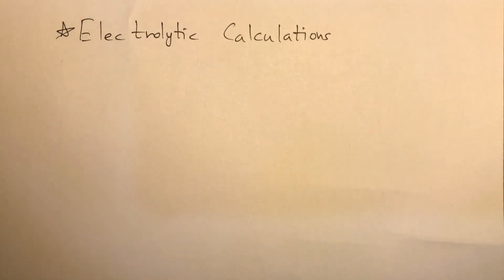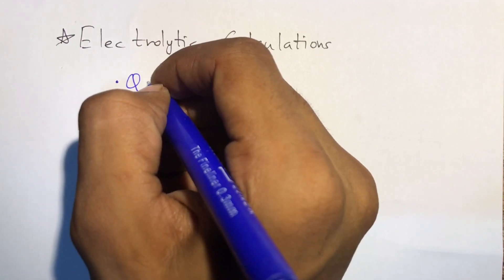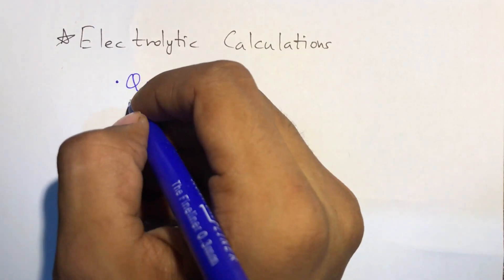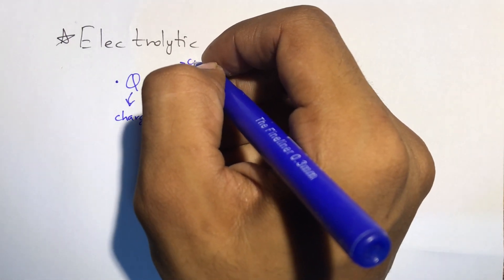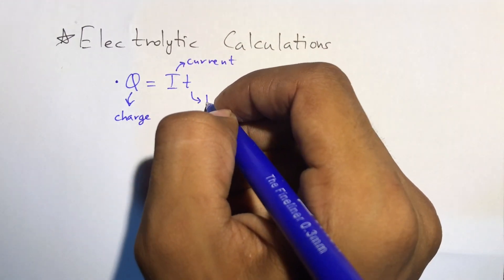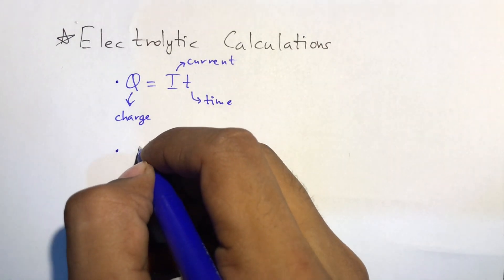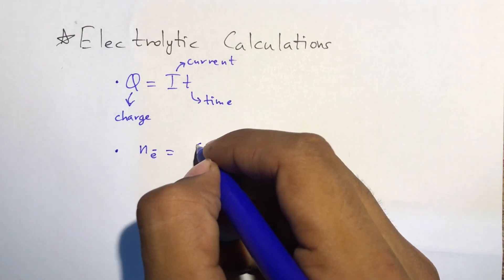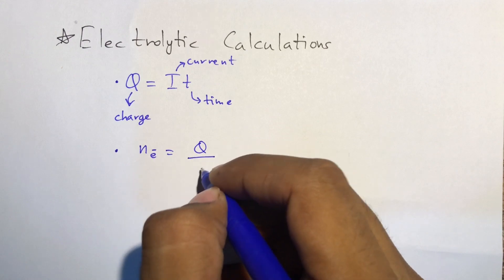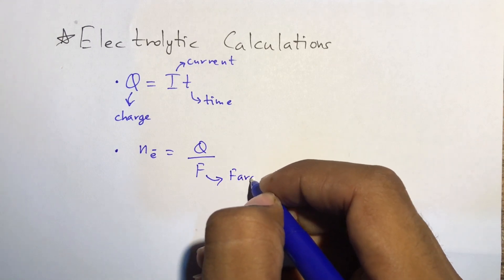We'll go through some electrolytic calculations. There are three basic formulas. The first formula is from physics: Q = It, where Q is charge, I is current, and t is time. The second formula is: moles of electrons n = Q/F.